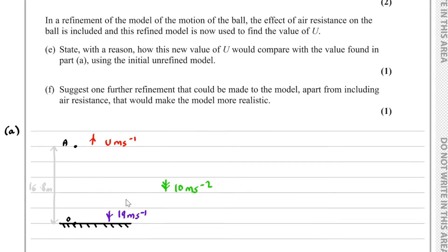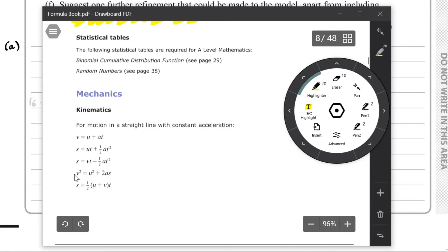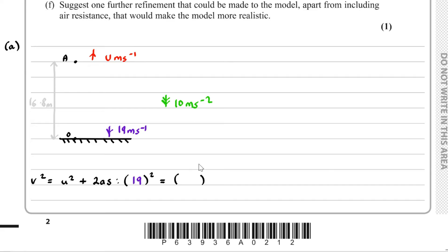To determine the value of U, we can use our SUVAT equations. The formula we want to use is V squared equals U squared plus 2AS. We want to use this formula because we know the final speed, we don't know the initial speed, we know the acceleration, and we know the distance. So using V squared equals U squared plus 2AS, we have V squared — that's 19 squared. This is equal to U squared. Now, be careful: if we said downwards is positive, U here will be negative. So we have minus U squared plus 2AS.